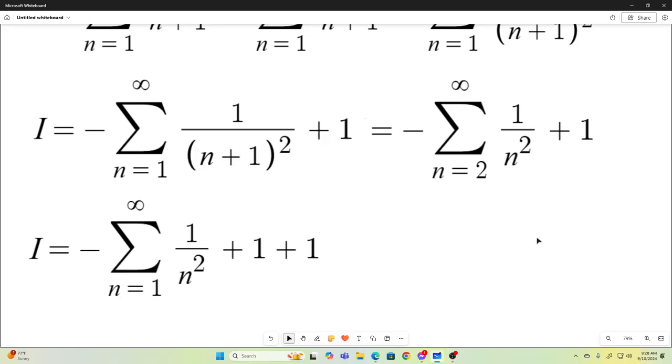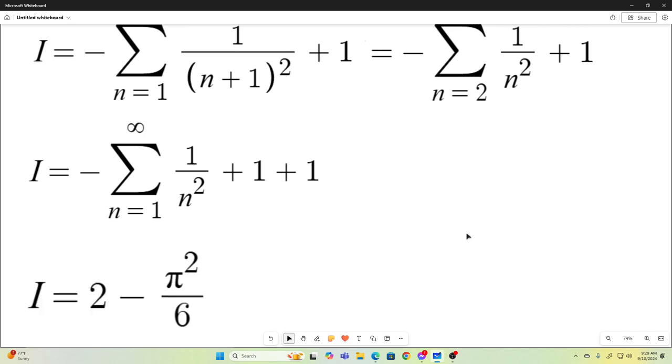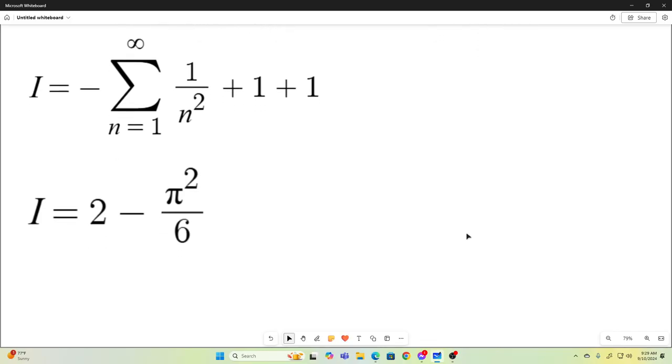So, now our I is equal to this. And many of you already recognize that this sum without the negative sign is equal to pi squared over 6. That is the sum of the reciprocals of the squares. That's pi squared over 6. So, our integral is simply 2 minus pi squared over 6. And that's it. That's the answer.